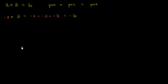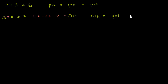Another way to think about it: if I had 2 times 3, I would get 6. But because one of these two numbers is negative, then my product is going to be negative. So if I multiply a negative times a positive, I am going to get a negative.